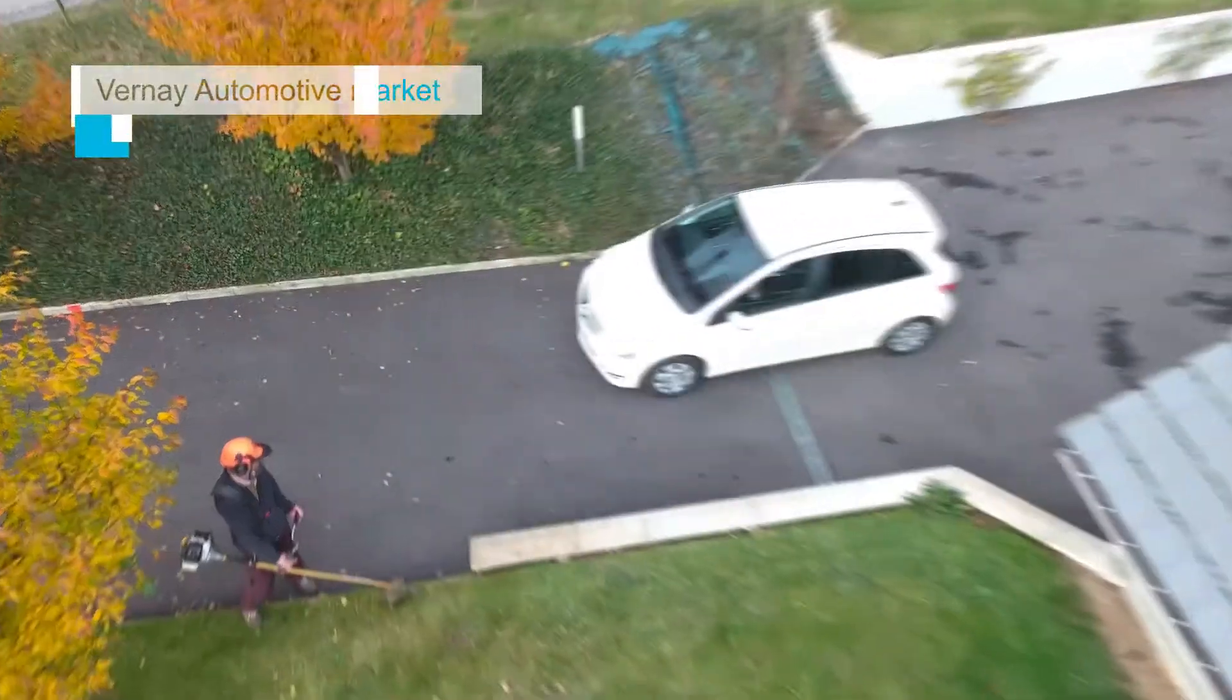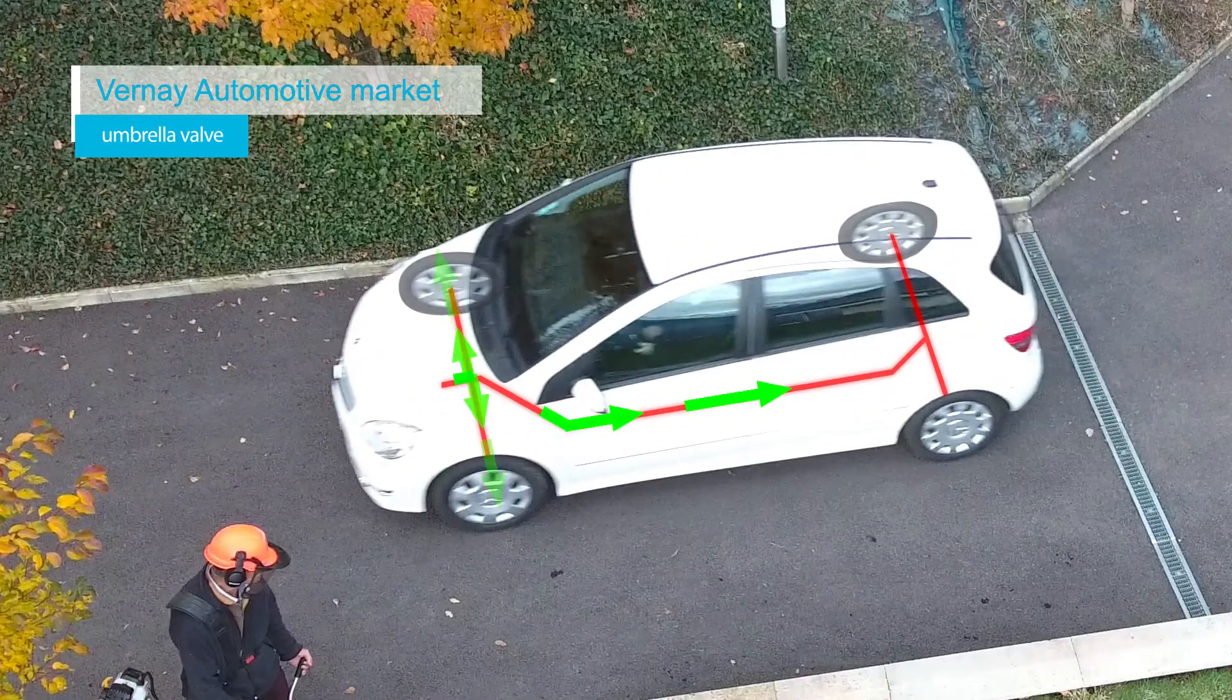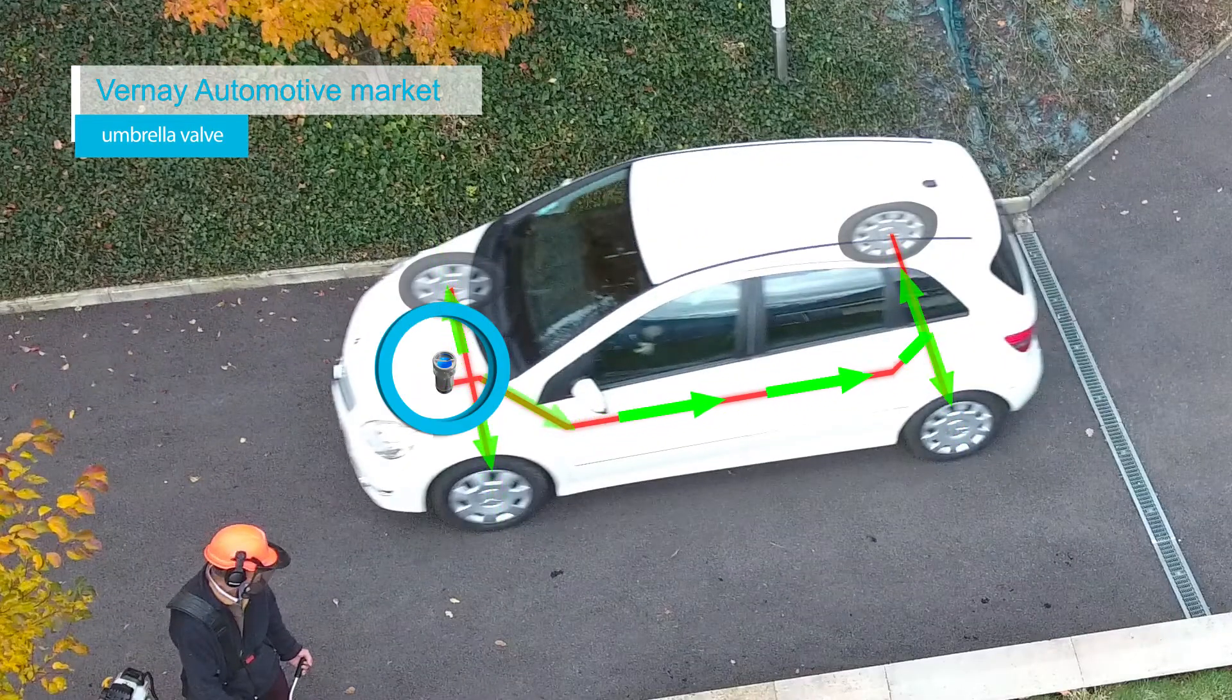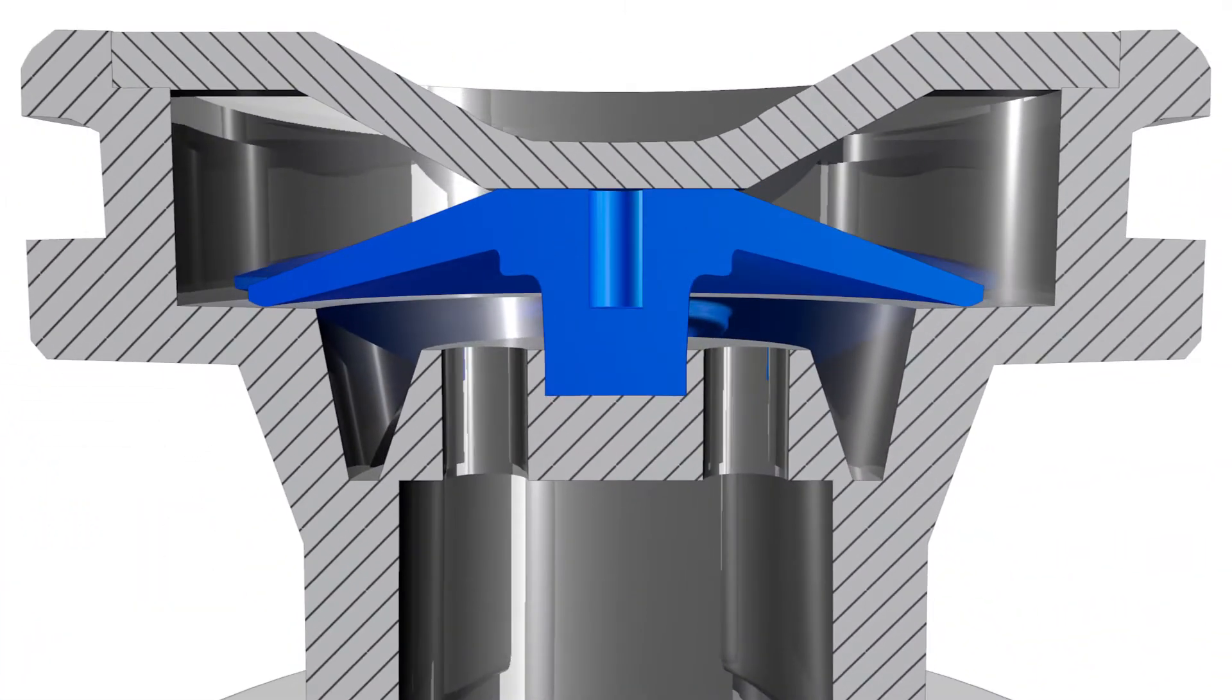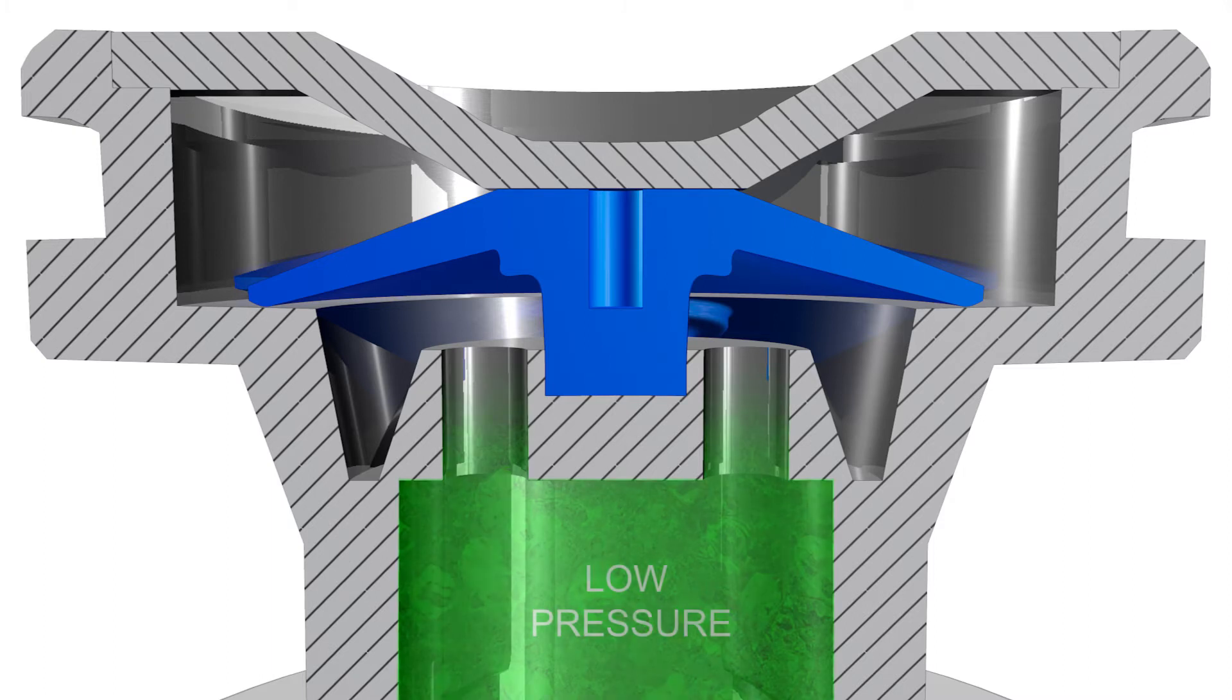We can also find valves in automobile braking systems. The main component used is an umbrella valve. It's located in a vacuum pump. Its role is to help create a low pressure in the servo brake to make braking easier for the driver.